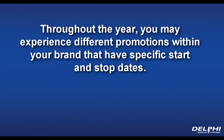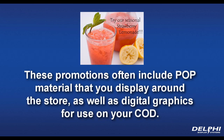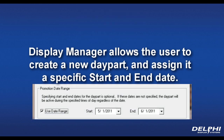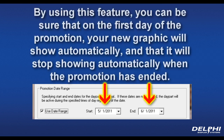Throughout the year, you may experience different promotions within your brand that have specific start and stop dates. These promotions often include POP material that you display around the store, as well as digital graphics for use in your COD. Display Manager allows the user to create a new day part and assign it a specific start date and end date. By using this feature, you can be sure that on the first day of the promotion your new graphic will show automatically, and that it will stop showing automatically when the promotion is ended.